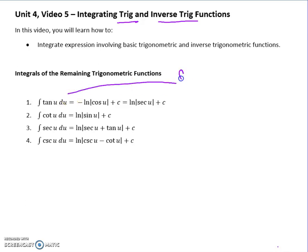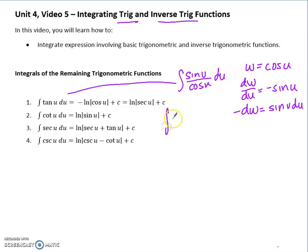Instead of tan, I'm actually going to change this into sine u over cos u. To find the integral of that, I'm actually going to have to use another substitution. So I'm going to call this denominator w, since I've already used u. I'm going to do the derivative of both sides and solve for my dw. So I'm going to multiply both sides by du, and also multiply by that negative.